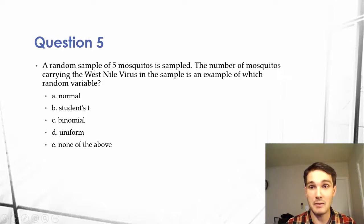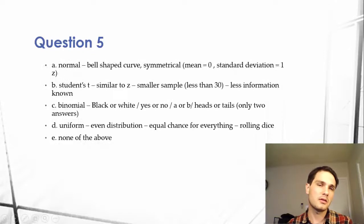The question is asking about how many mosquitoes are carrying the West Nile virus. So we have to understand what each kind of distribution represents, and understand their definitions in order to properly answer this question. So I'm going to quickly go into the definitions, and then we'll talk about the theory of the question.